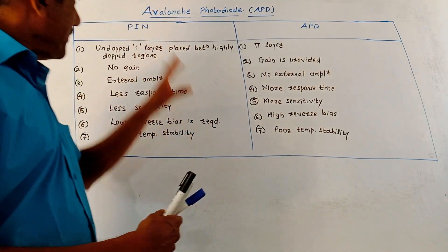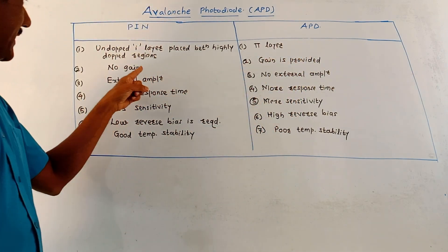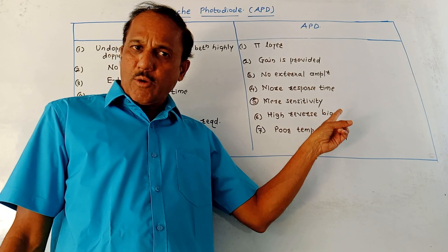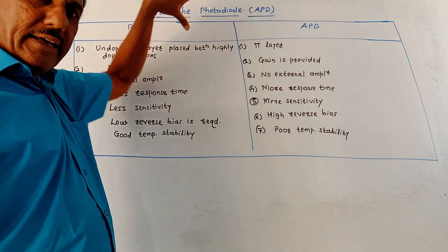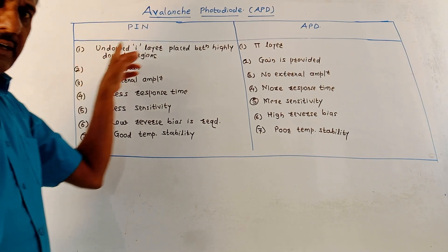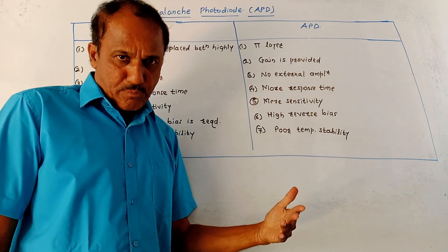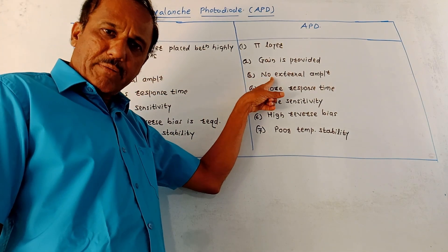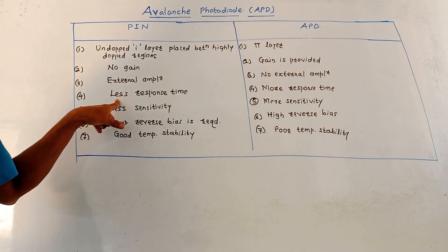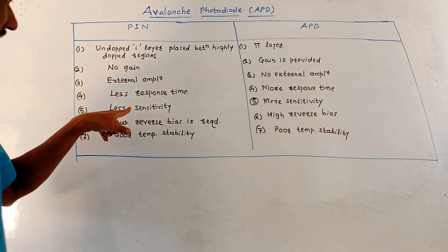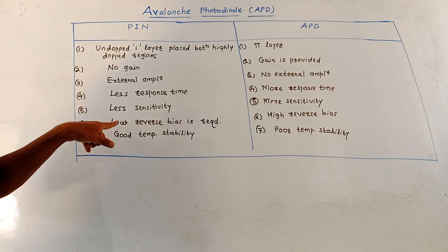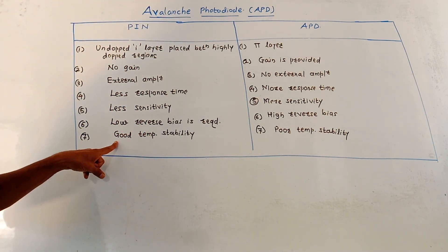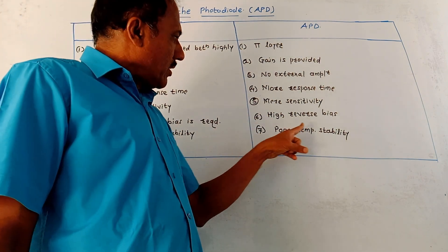The comparison between PIN photodiode and APD: In PIN, an intrinsic I layer is placed between heavily doped regions, while in APD a π layer is used. PIN provides no gain and requires external amplifiers, whereas APD provides gain through avalanche multiplication and does not require external amplifiers. PIN has less response time; APD has more response time. PIN photodiodes are less sensitive; APD is more sensitive. PIN requires low reverse bias; APD requires high reverse bias. PIN has good temperature stability; APD has poor temperature stability.